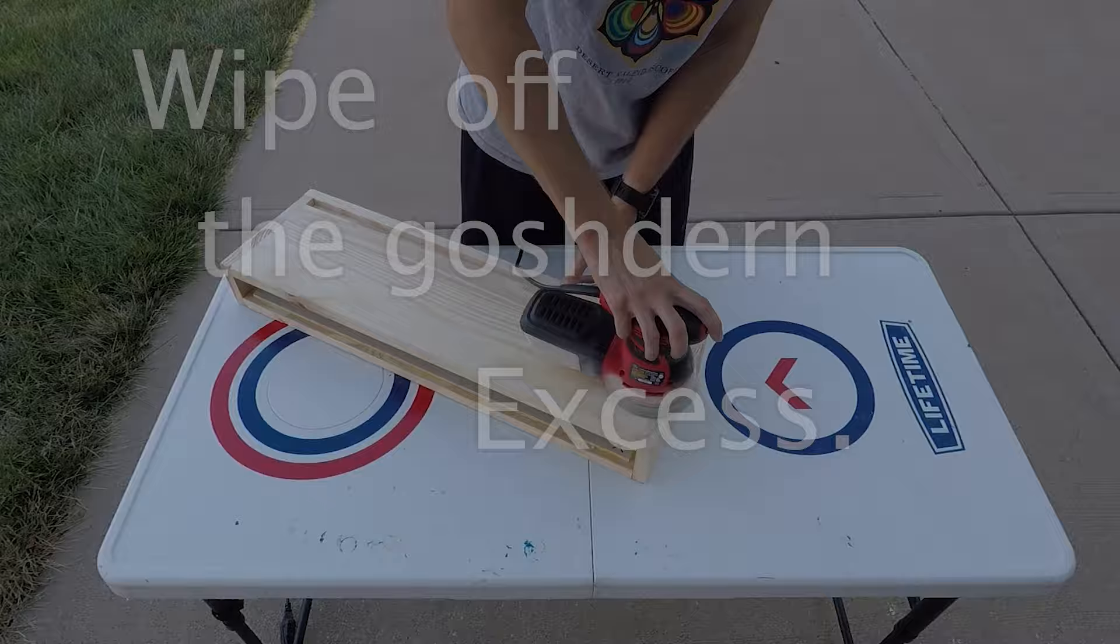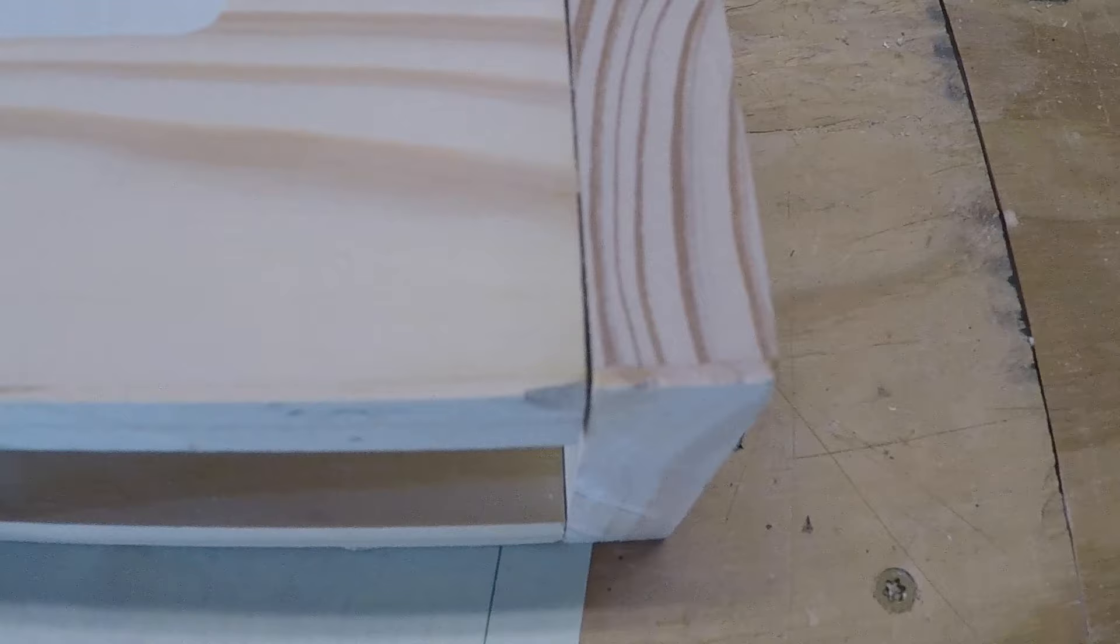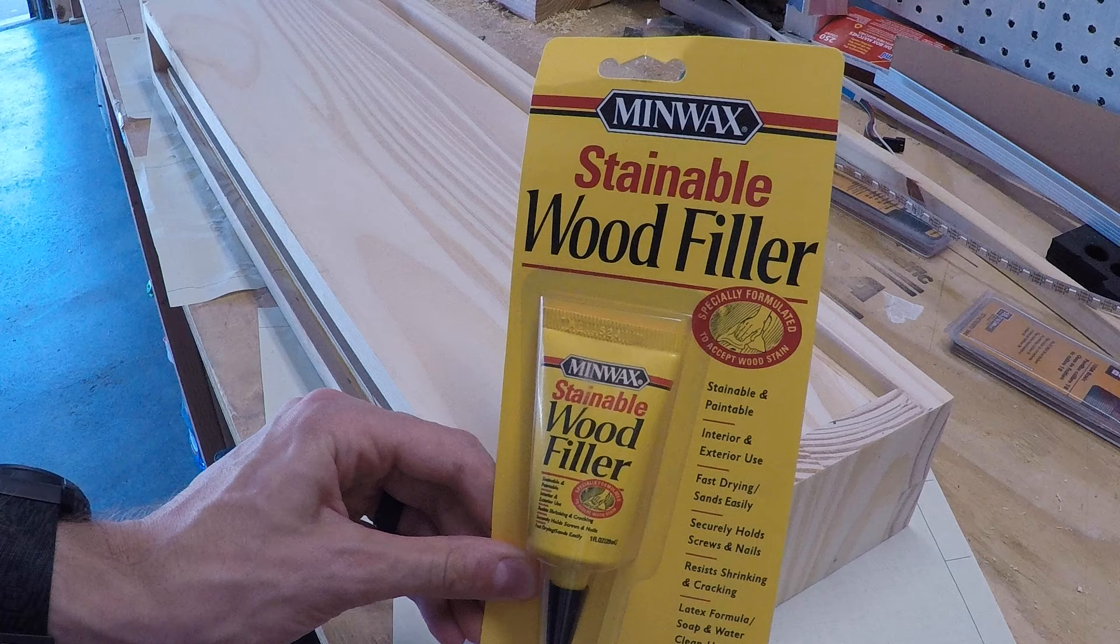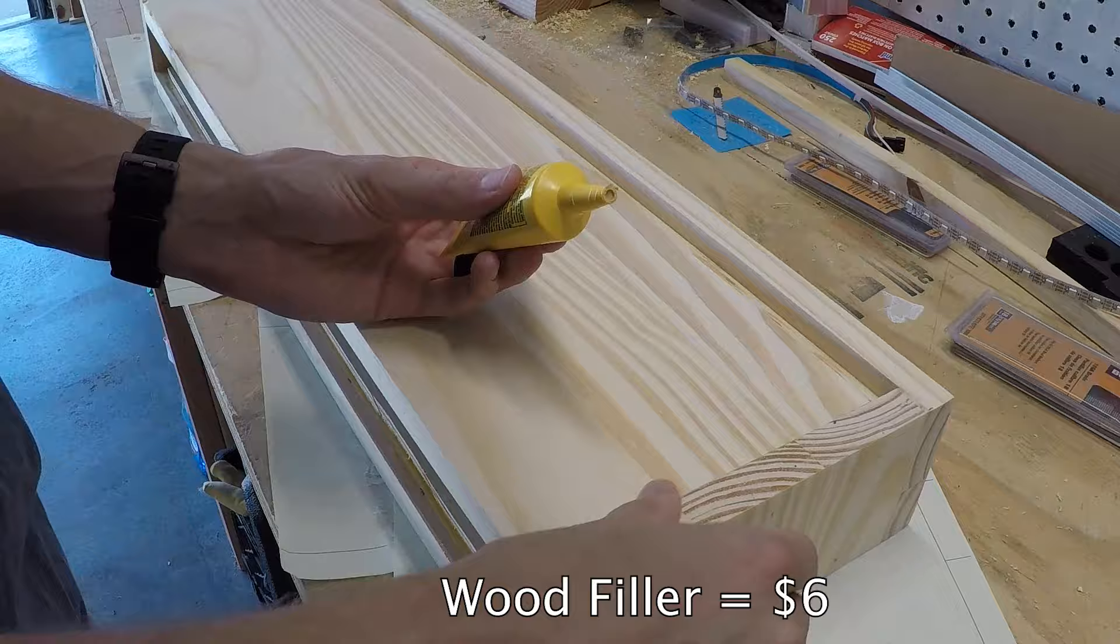Alright, so at this point we're almost ready to stain, but you can see here we have a couple cracks on either side of the shelf where the top meets the sides. I wasn't joking when I said my woodworking skills were average at best. You know, if it was a joke it would have been funny. So to fix this we're going to use Minwax stainable wood filler to hide all that shoddy workmanship as well as the nail holes. And once it dries I'll go ahead and sand it down once more.